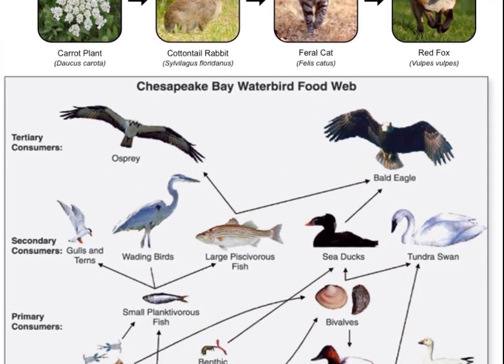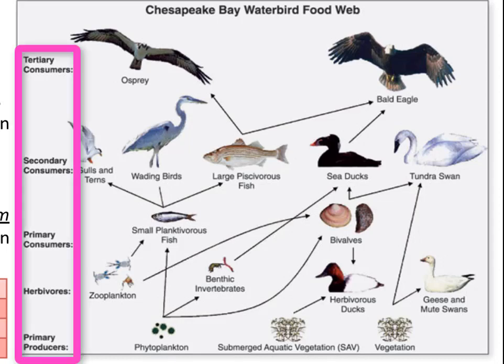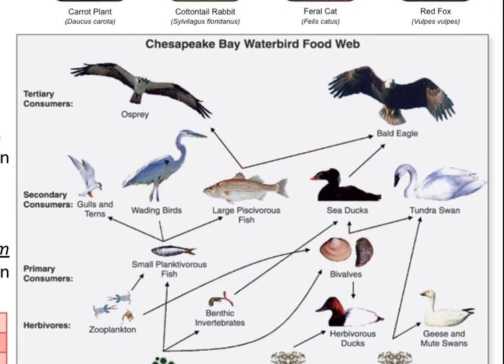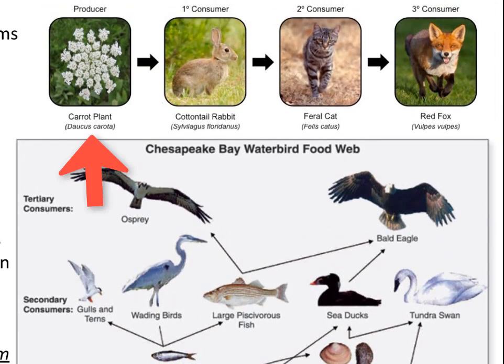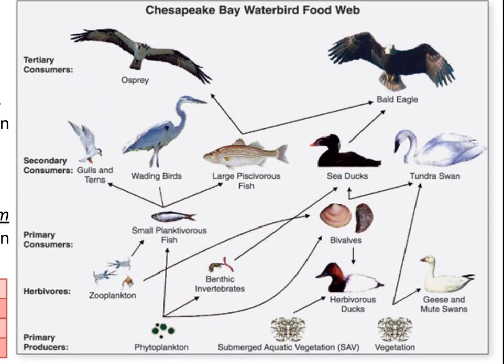Below the food chain you can see a much more complex image — this is a food web, in which there are many interconnected food chains. Each organism in a food web or food chain occupies a certain place within each feeding sequence; this is called the trophic level. In the food chain at the top, the carrot plant is the first trophic level (the producer), the rabbit is the primary consumer or second trophic level, the cat is the secondary consumer or third trophic level, and the fox is the tertiary consumer or fourth trophic level. Notice that arrows point in the direction that energy is being transferred — for example, the arrow pointing to the rabbit represents energy being transferred from the carrot to the rabbit.